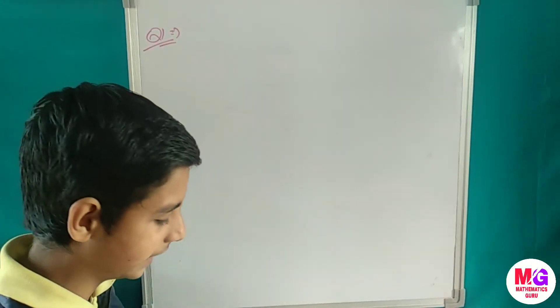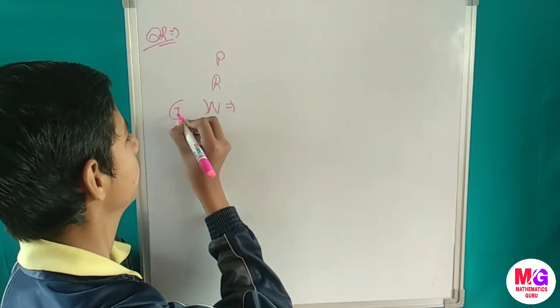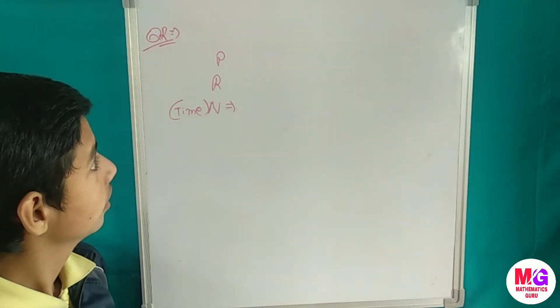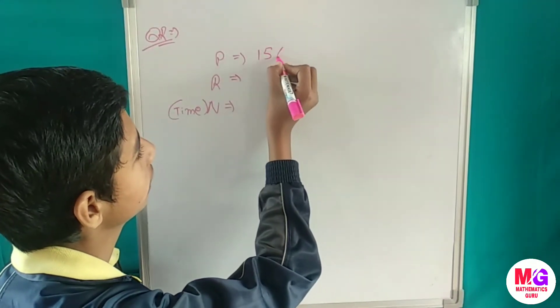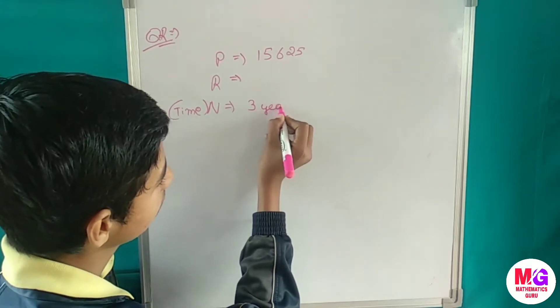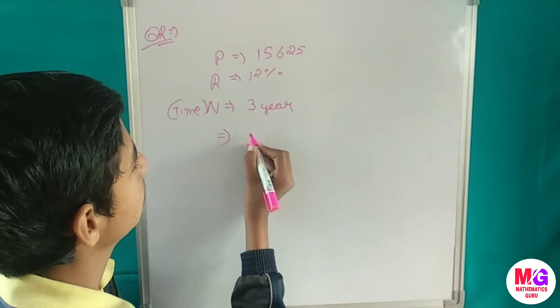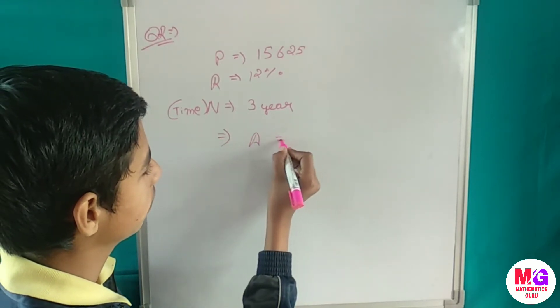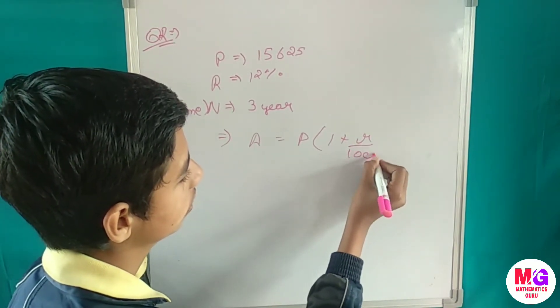Question number 2 is also to find the amount and the compound interest — the same type of question but with different values. The principal is rupees 15625, the time is 3 years, the rate is 12% per annum. To solve this we will use the formula: Amount equals P times (1 plus R upon 100) to the power n.